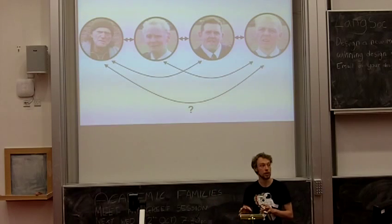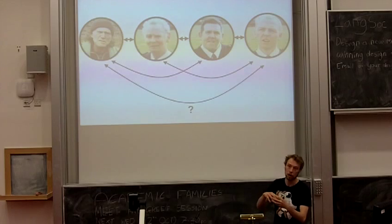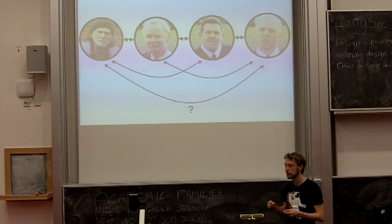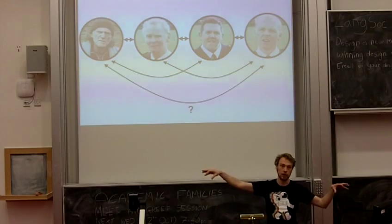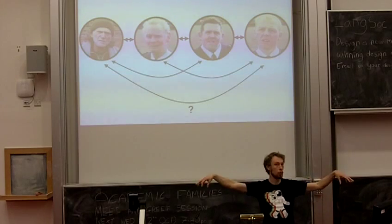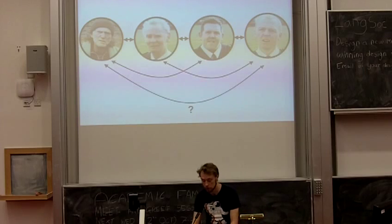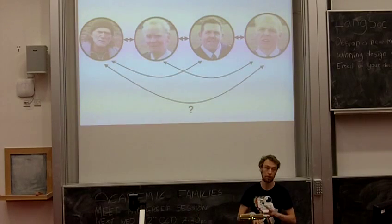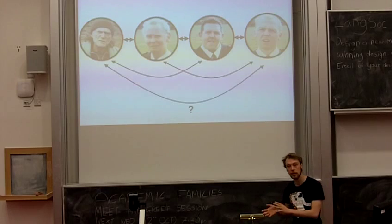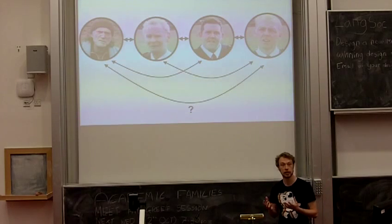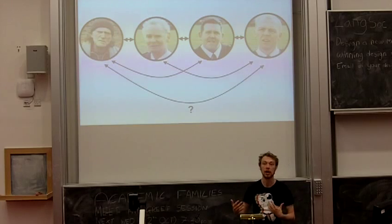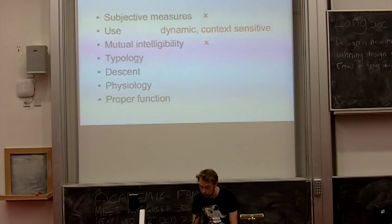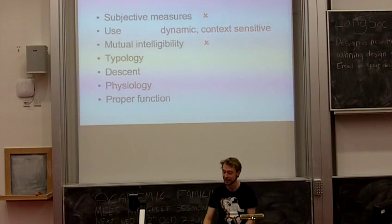You get this problem in biology as well — there are chains of organisms where each can mate with its neighbor, but the opposite ends can't mate. And it's not just hypothetical: there are different theories of the Japonic languages. Some theories say there's just one Japanese language with different dialects; others say there are actually 20 separate languages. This is a real debate that real linguists have.